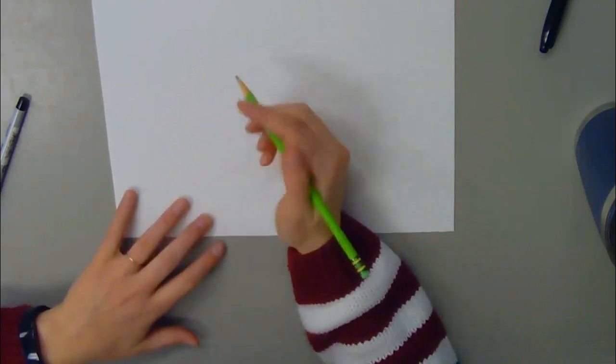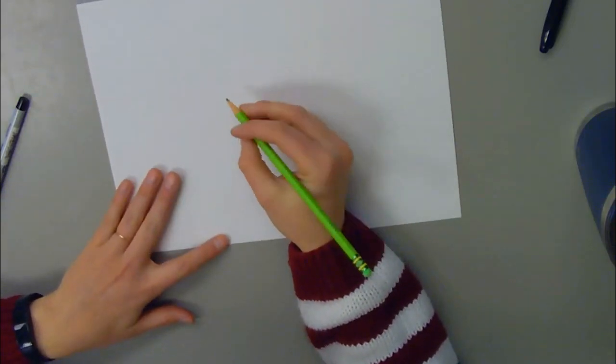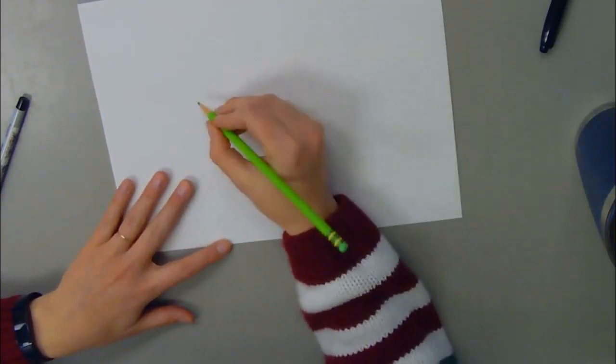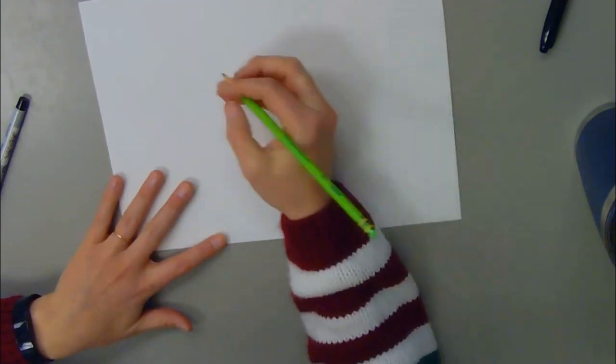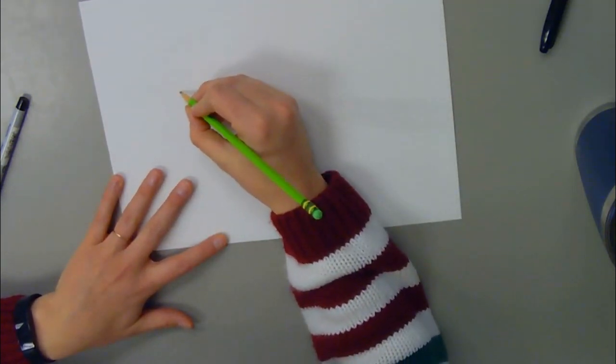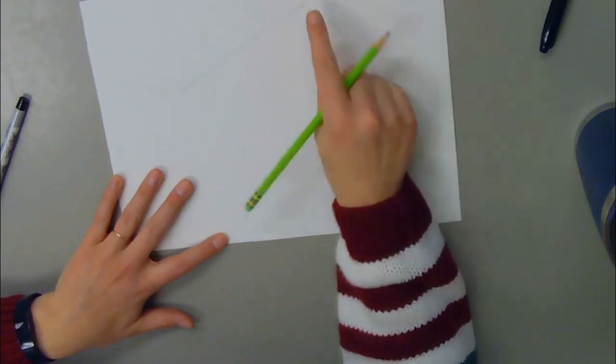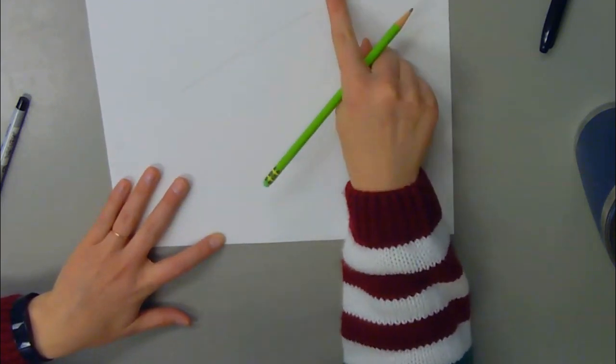We're going to be drawing the pie slice so it looks three dimensional. I'm going to start with the top of the pie, drawing up here near the top of my page. I'm going to start with a diagonal line. I don't want my diagonal line to go too close to the top.